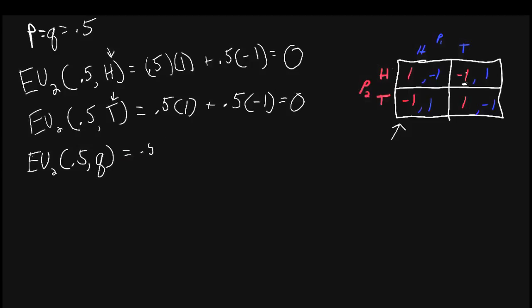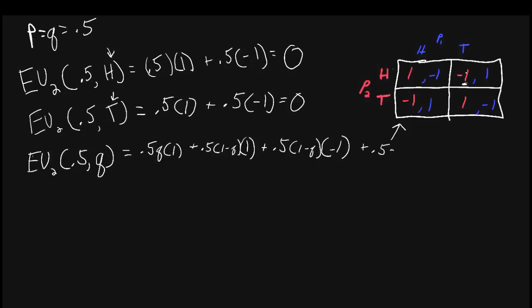We can write this out. It's 0.5 times q — this is them both playing heads — so 0.5q proportion of the time player 2 will earn 1, plus 0.5 times (1 minus q), which is player 1 playing tails and player 2 playing tails, earning 1. Then half the time player 1 plays heads and player 2 plays tails, giving negative 1, and half the time player 1 plays tails and player 2 plays heads, giving negative 1. If we multiply this out, we see that independent of q, player 2 will earn 0.